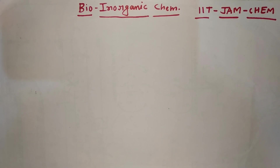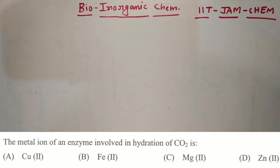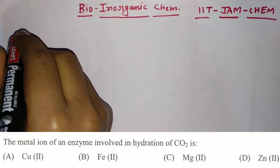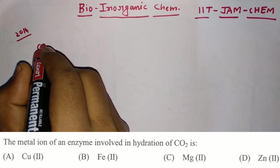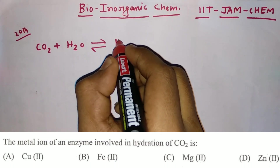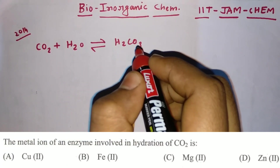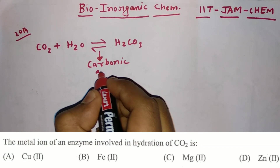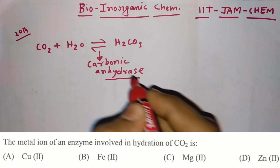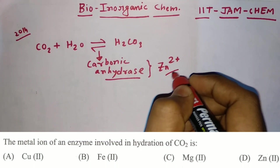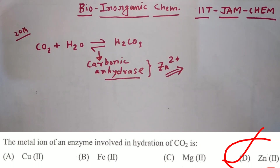The first question from JAM 2014 was: the metal ion of an enzyme involved in hydration of CO2. CO2 plus H2O gives H2CO3, carbonic acid. This reaction is catalyzed by the enzyme carbonic anhydrase, which consists of the Zn2+ metal ion. So the final answer is Zn2+, and option D is correct.